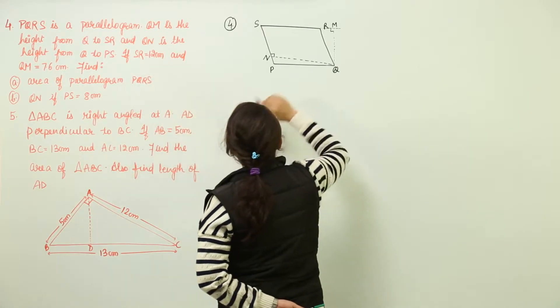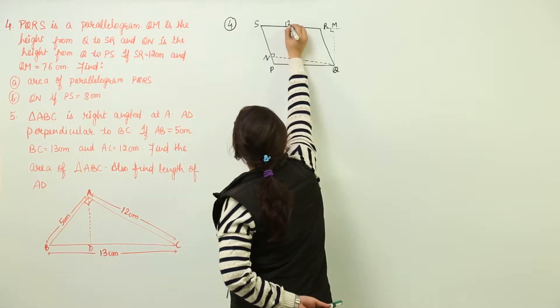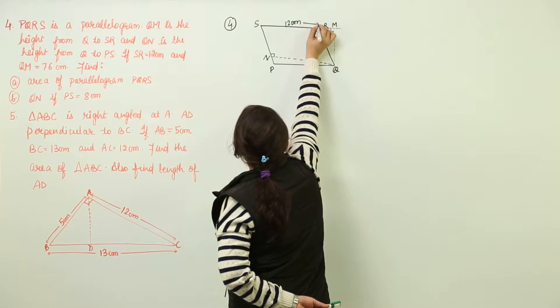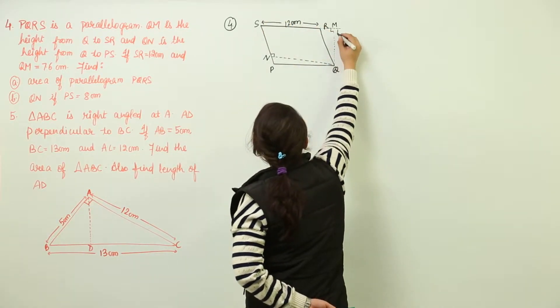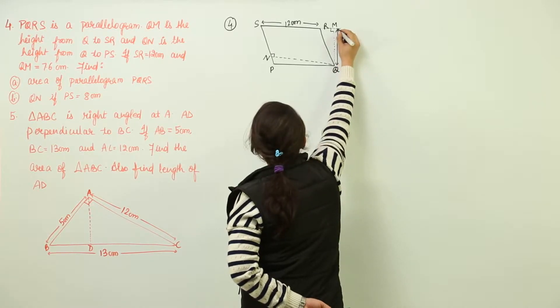Now we have been given the measurements of SR which is 12. SR is given as 12 centimeters. QM is given as 7.6 centimeters.